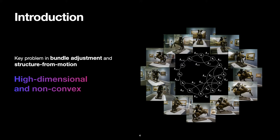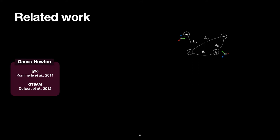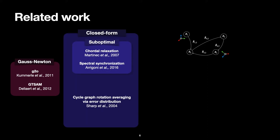To give you an overview of the literature, we can start with Gauss-Newton, with two of the most popular frameworks being G2O and GTSAM. In parallel, a number of closed-form solutions have been put forward, some being sub-optimal without guarantees of optimality but providing good approximation of the global optimum, such as the chordal relaxation and spectral synchronization.